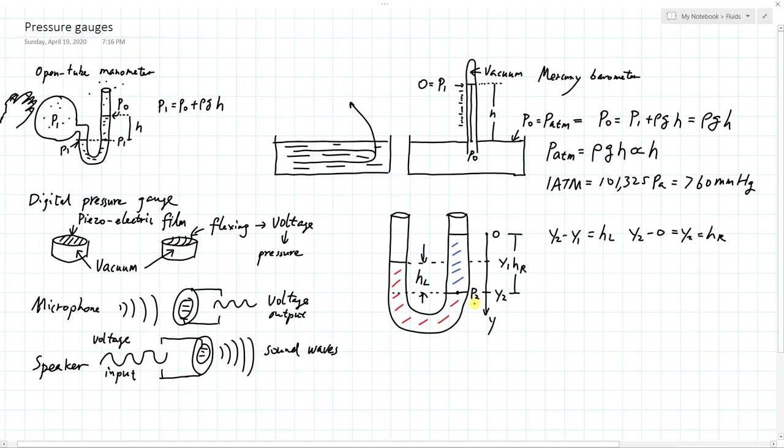And then we can also define this side as h right, so also between its own liquid and air interface and the two liquid interface, the two different heights. And also we have these coordinates so we can say that y2 minus y1 is equal to height left, and y2 minus 0 or y2 is equal to height right.